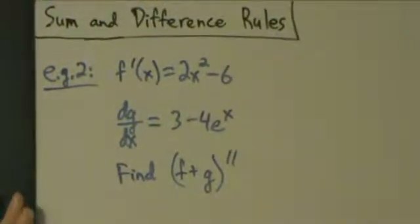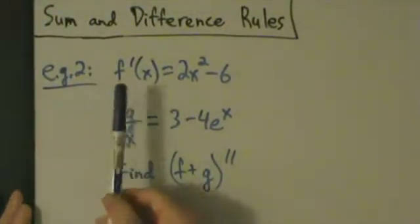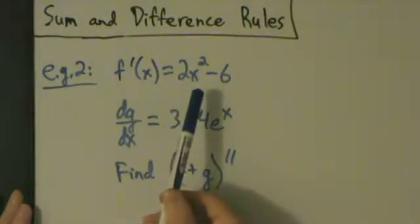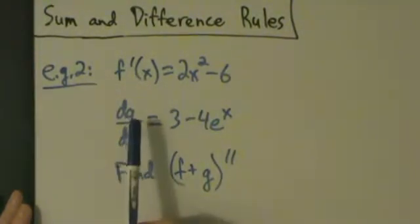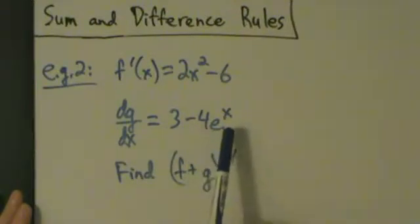Alright, so here's example two with the sum and difference rules. We're given f'(x) = 2x² - 6, and we're also given dg/dx = 3 - 4e^x.